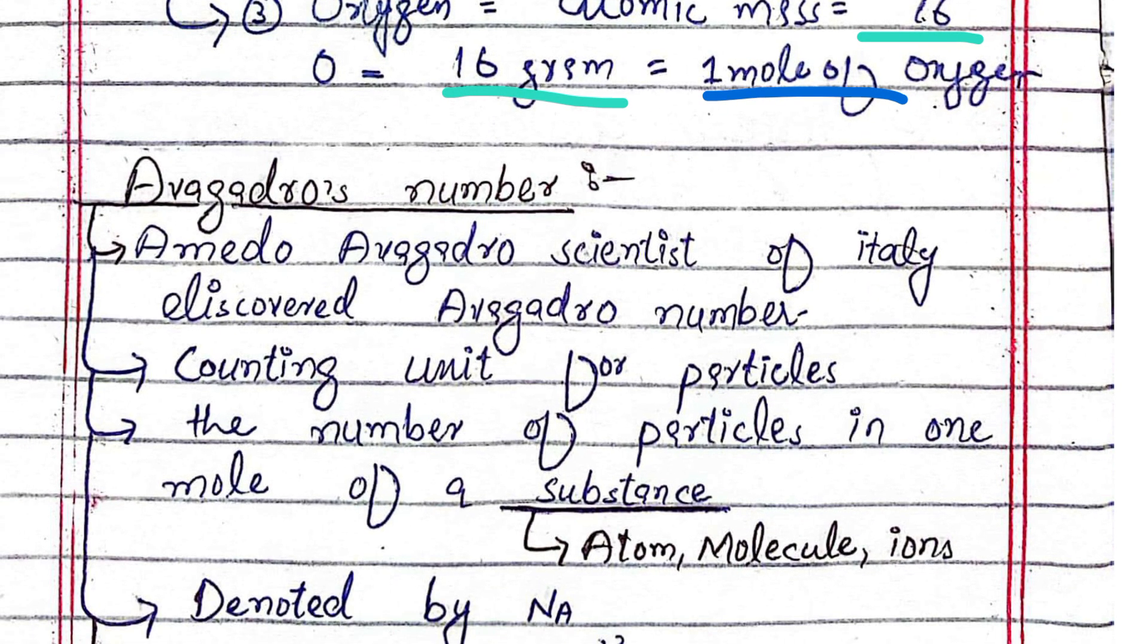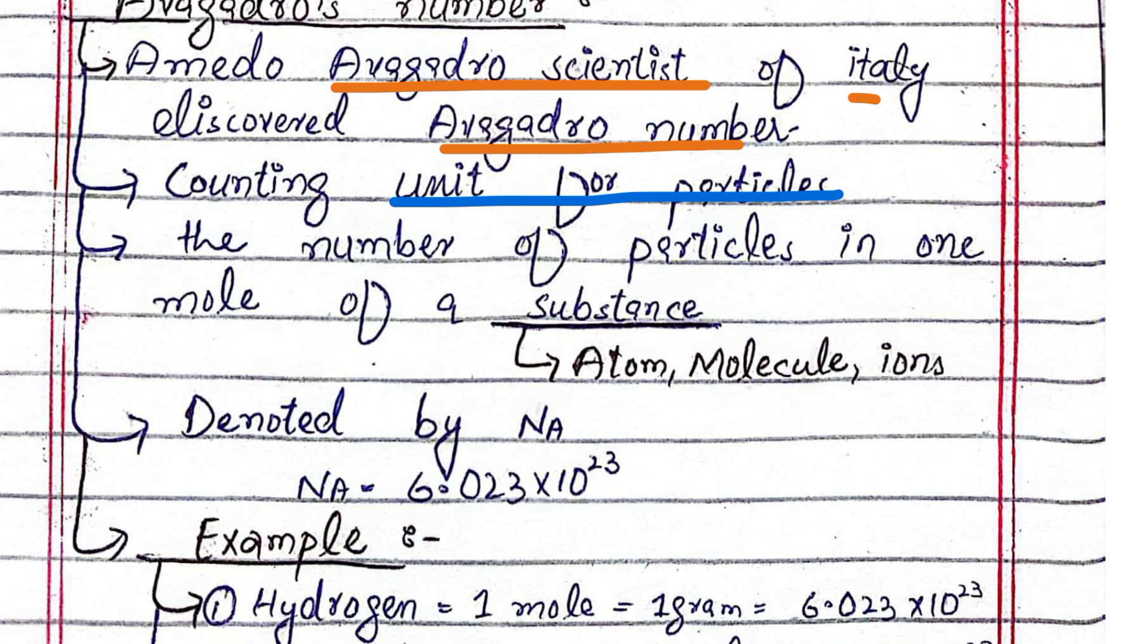Avogadro number: Amedeo Avogadro, a scientist of Italy, discovered Avogadro number. It is a counting unit for particles.